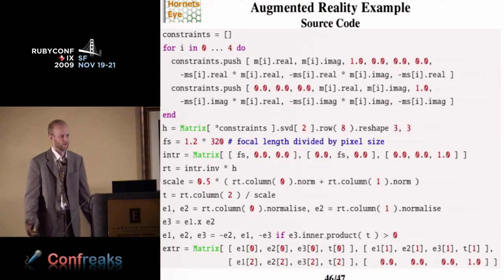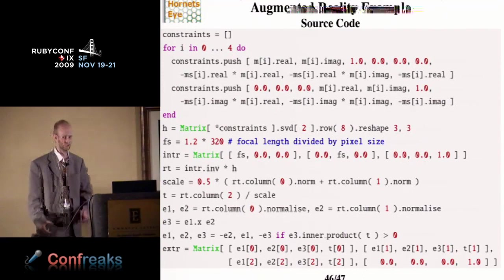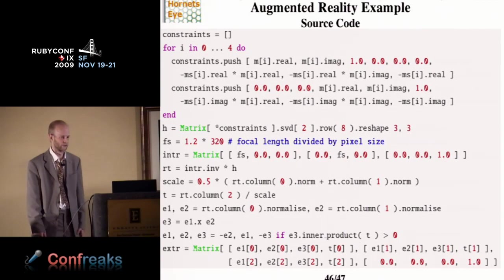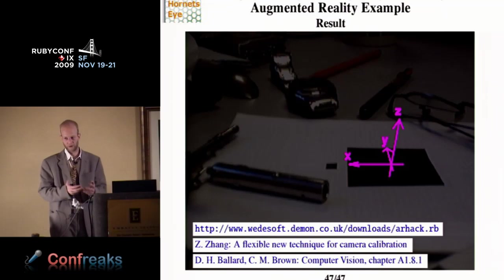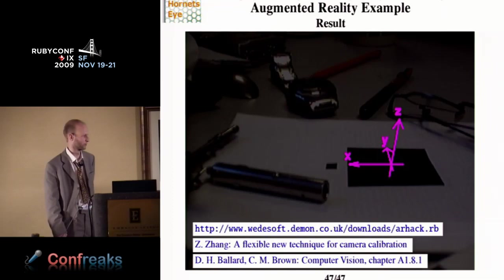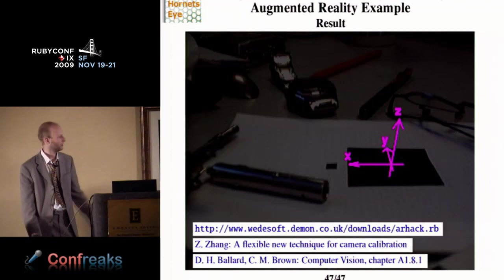Because now you know the matrix apart from a constant factor. And if you compare, that's the source code, so after lots of thinking you end up with very little source code actually. Okay, I haven't included the source code of a singular value decomposition, I just use a singular value decomposition from the linear Ruby extension. But that's all the code, and at the end you have the extrinsic camera matrix, and then you have enough information to draw a coordinate system like this into your image. And if you want to go over this again, I can recommend Zinyu Zhang's paper about camera calibration, and I can also recommend a chapter of Ballard and Brown's computer vision book.